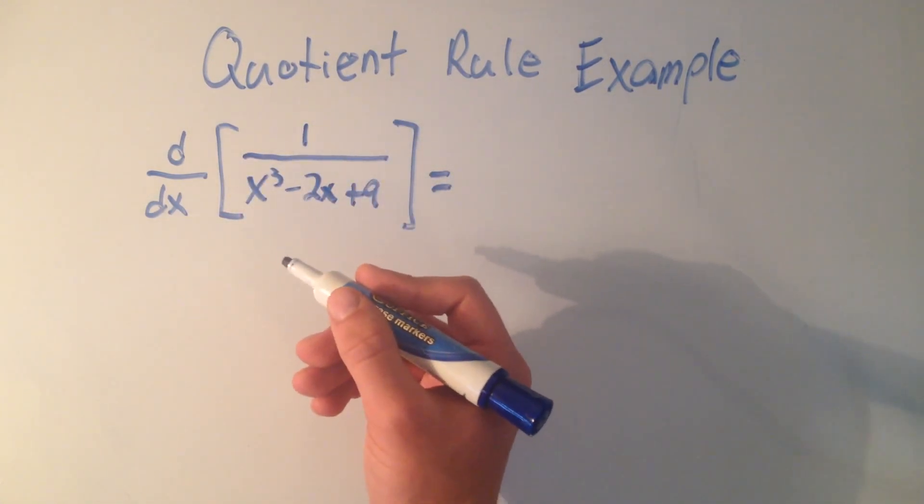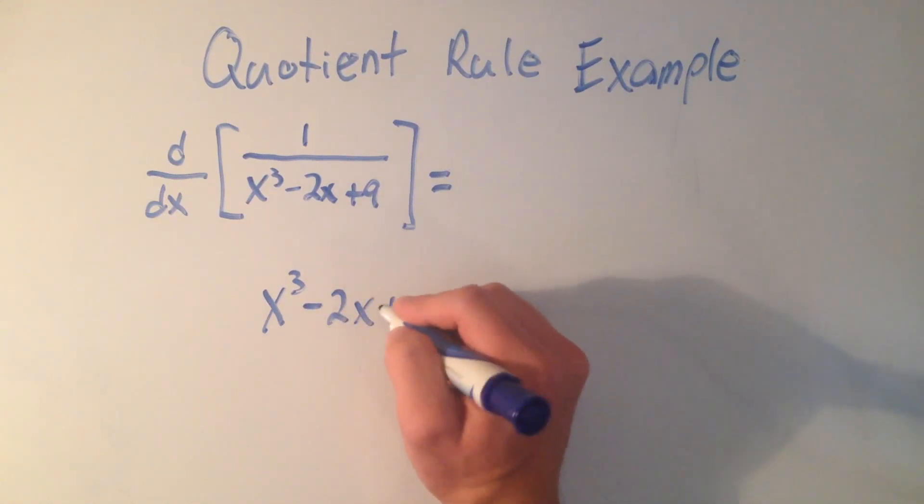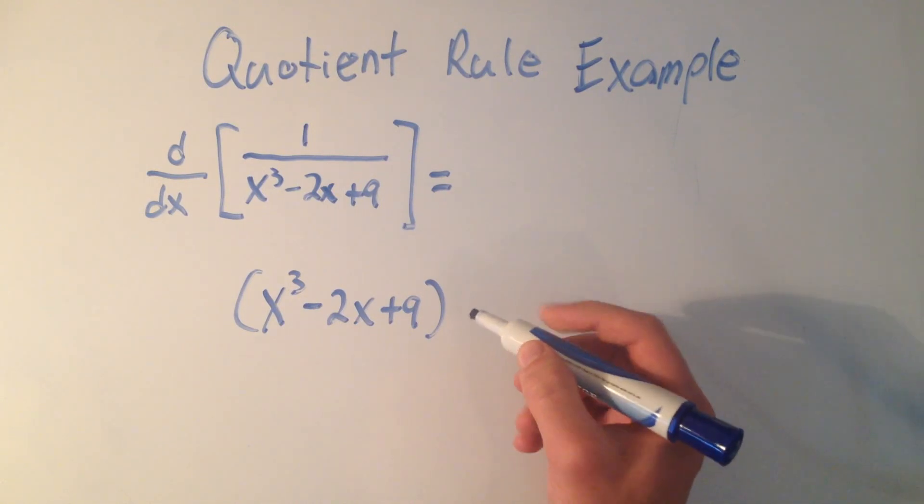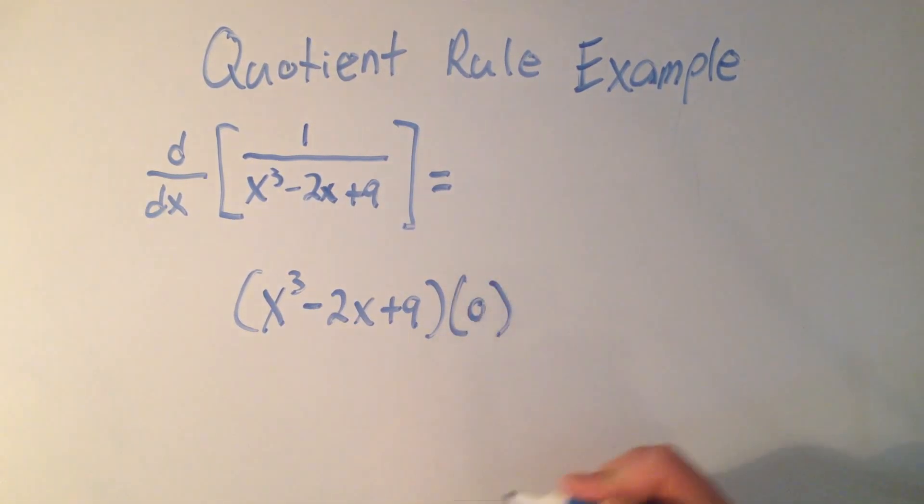The quotient rule says I take the bottom exactly as it is, I copy it, copy the whole denominator, times the derivative of the top. And the top is 1, it's a constant, so its derivative is 0.